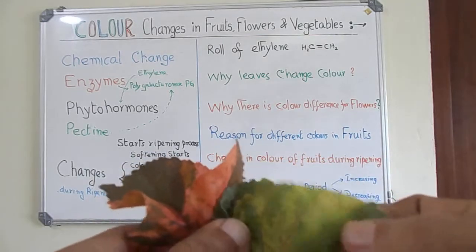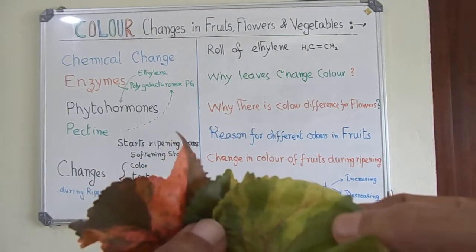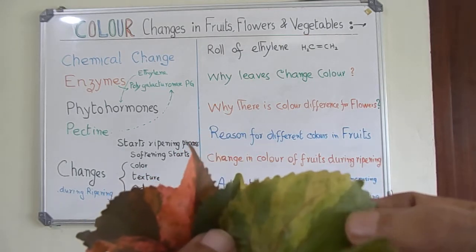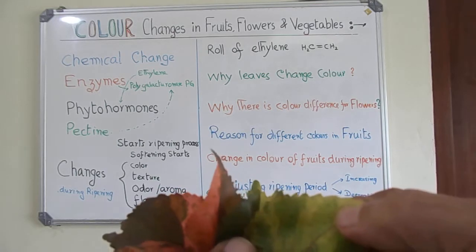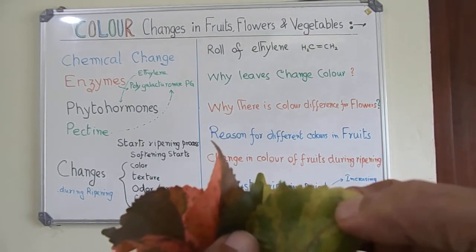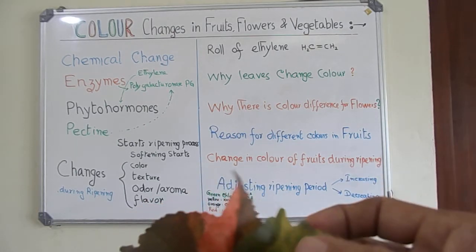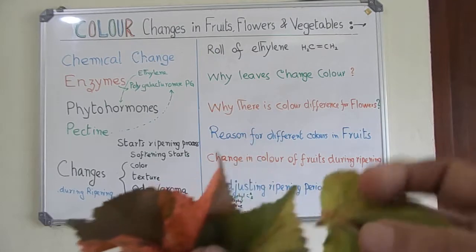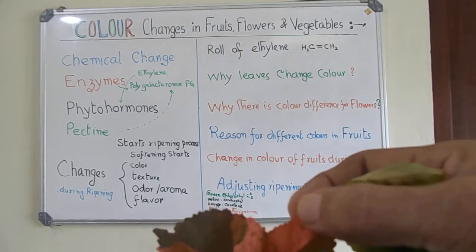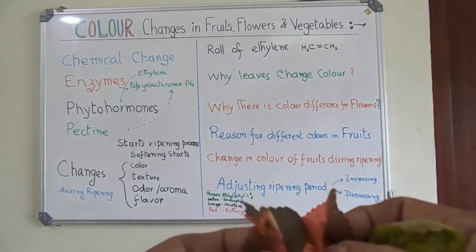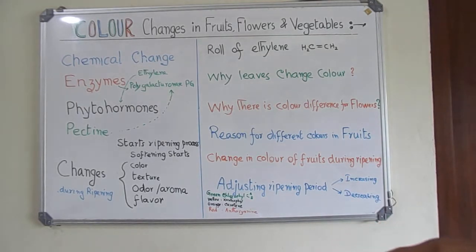To begin with: the green color is due to chlorophyll. The bluish green color is due to chlorophyll A; the yellowish green color is due to chlorophyll B. Yellow color is due to xanthophyll. Orange color is due to carotene.